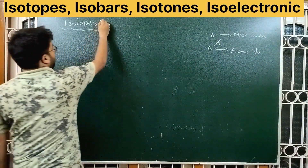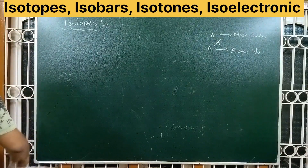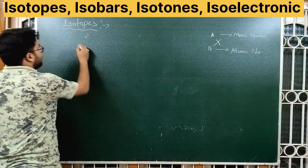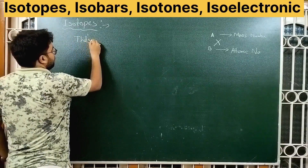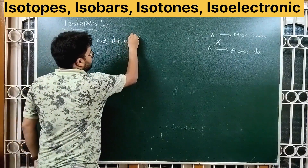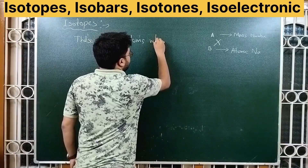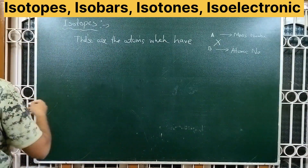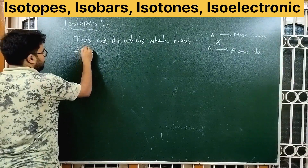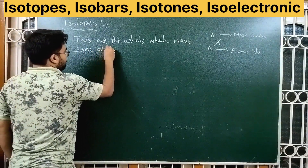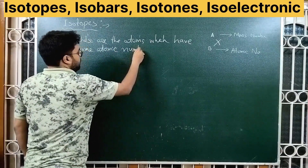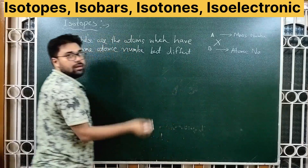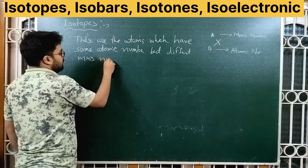For isotopes, the definition is: these are the atoms which have the same atomic number but different mass numbers. They have the same atomic number and different mass numbers.